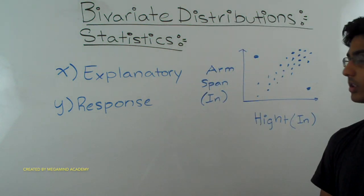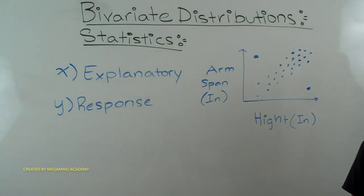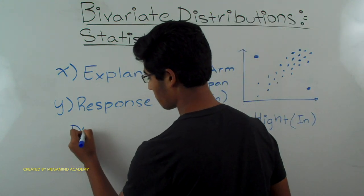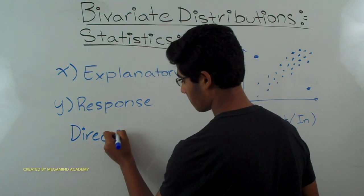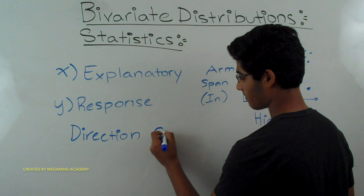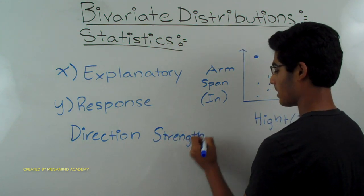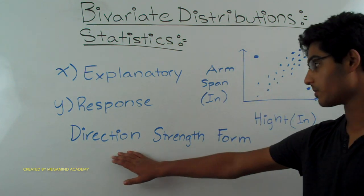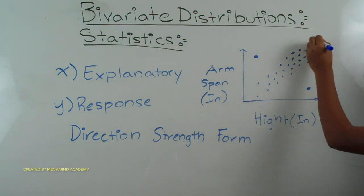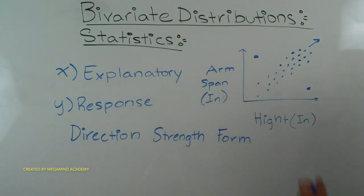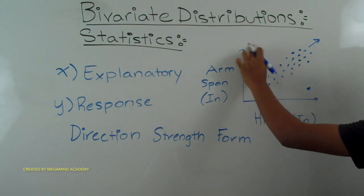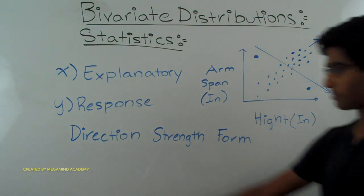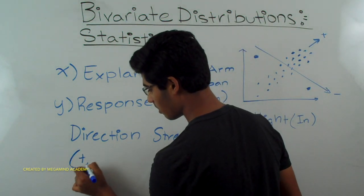When describing bivariate distributions, we have to describe three things: direction, strength, and form. The direction is simple — it's just positive or negative. If the graph is going up, it's positive; if the trend is going downward, it's negative.